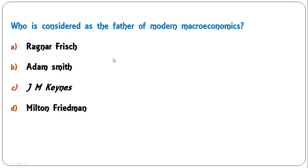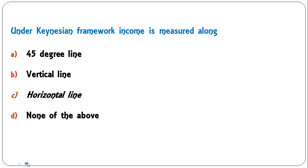Next question: who is considered the father of modern macroeconomics — Ragnar Frisch, Adam Smith, J.M. Keynes, or Milton Friedman? Undoubtedly it is J.M. Keynes who is considered the father of modern macroeconomics. C is the correct answer. Under Keynesian framework, income is measured along the 45 degree line, vertical line, horizontal line, or none of the above? The correct answer is horizontal line.